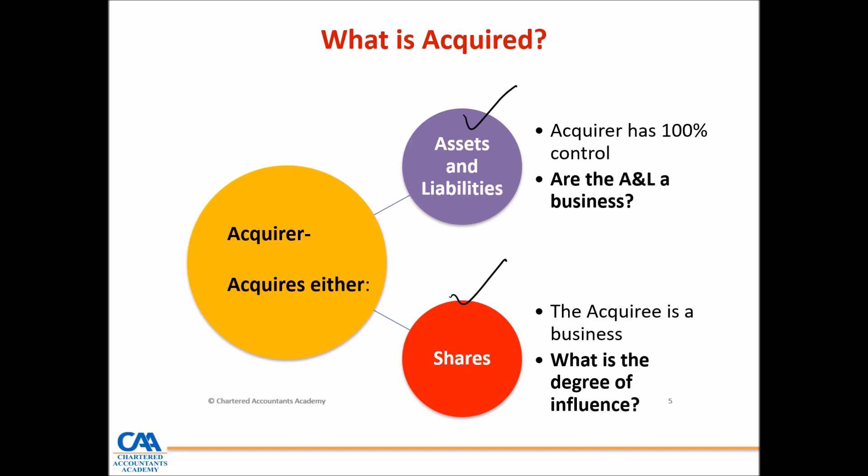Therefore, the acquirer must assess whether the assets and liabilities are a business. IFRS3 provides guidance on assessing whether the transaction or event involving assets and liabilities is a business. When an acquirer acquires shares, there is no doubt that the shares, which make up the business, constitute a business. But the problem is whether the acquirer has control — and that is the key issue.